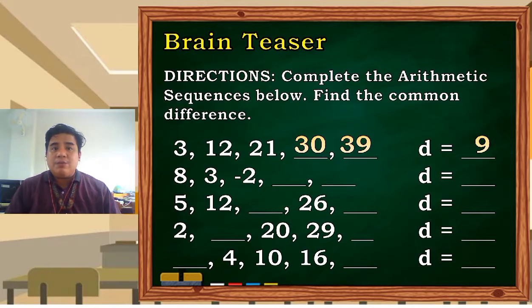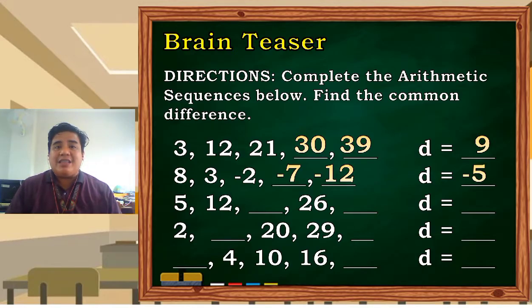3, negative 2. So it's decreasing. What do you think is our next number? Our next number is negative 7, followed by negative 12. And what is our common difference here? Negative 5. We are subtracting 5. When we subtract, class, that is a negative number.